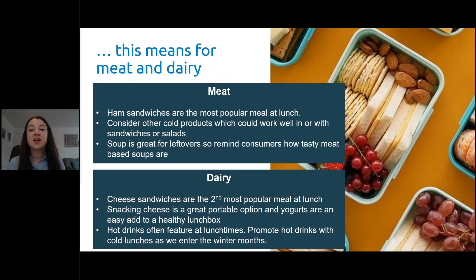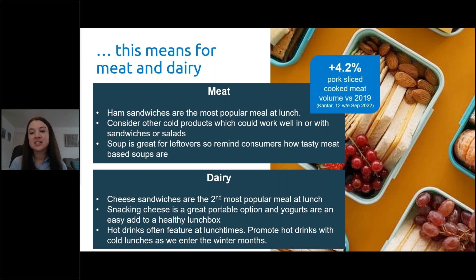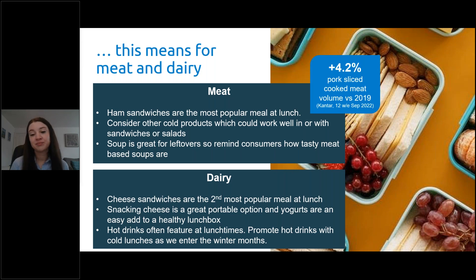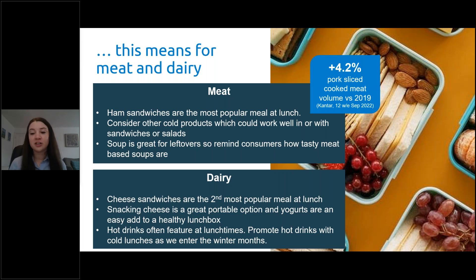What are the opportunities? Meat may look to benefit from this increase in lunchboxes. Ham sandwiches are an absolute favourite at lunchtime, and because of this, pork sliced cooked meats are one of the few cuts in volume growth versus 2019. Red meat should also consider other cold products which could work in sandwiches and salads such as corned beef slices but also ready-to-eat products. For dairy, cheese sandwiches are the second most popular meal at lunchtime, and with all these sandwiches, butter and spreads are likely to see some uplift. Cheese and yogurt should also consider snacking options as these are growing in popularity in lunchboxes.